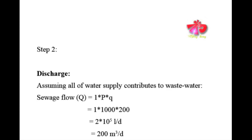In Step 2, we find the discharge. We assume all water supply contributes to wastewater with no losses. The sewage flow Q = population × water supply rate = 1000 × 200 LPCD = 2×10⁵ liters per day.